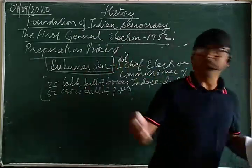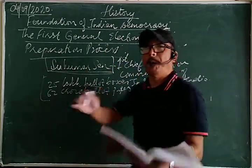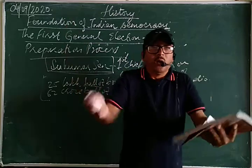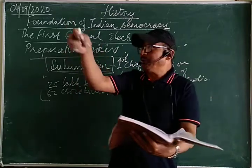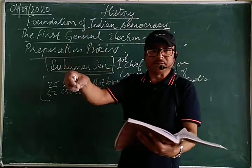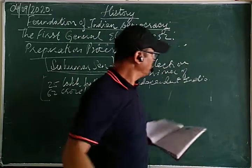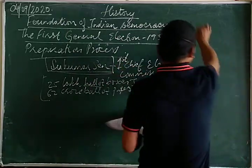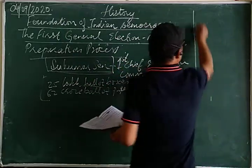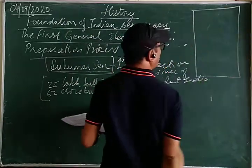So during that election, 25 lakh ballot boxes and 62 crore ballot papers were used. For every 1,000 voters, there was one polling booth. A polling booth is a small room or place where you go inside and cast your vote.